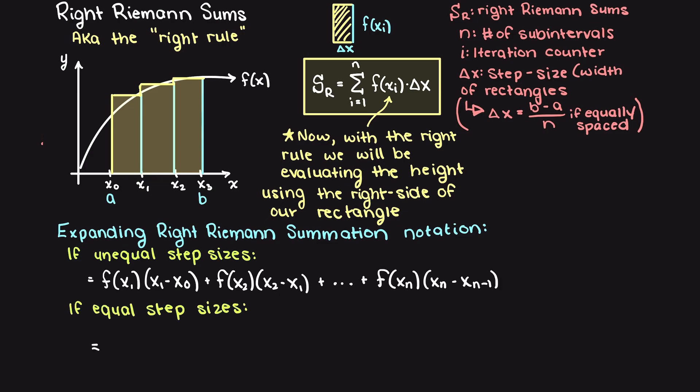If all our rectangles do share the same delta x, then we can condense this formula by factoring out our delta x term, just like we did for the left Riemann sum.